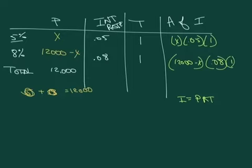And what else does it say? After one year, he owes $750. So what we're going to end up doing with this is we're going to take the interest here and the interest here, add them together and we should get $750.